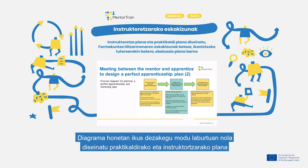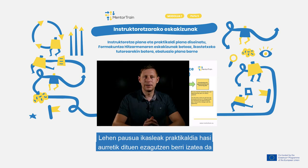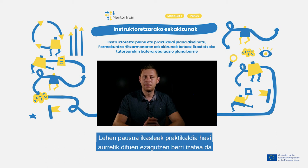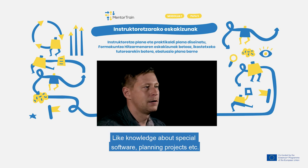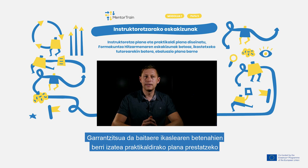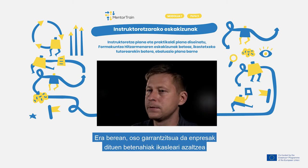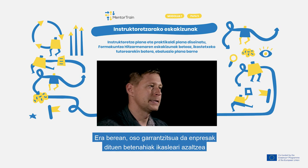On this picture we see a simplified process diagram of how to design a mentoring and apprenticeship plan. Firstly, we must find out how much knowledge the apprentice already has to perform different work tasks, like knowledge about special software, planning projects, etc. It's important to find out the expectations of the apprentice and use that for planning the apprenticeship. And it's very important to explain the expectations of the company to the apprentice too.